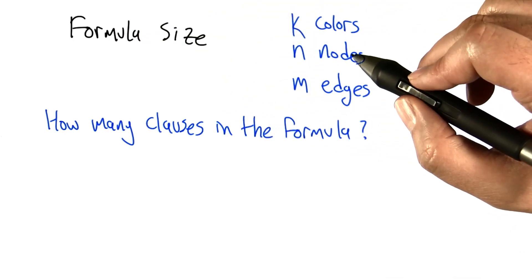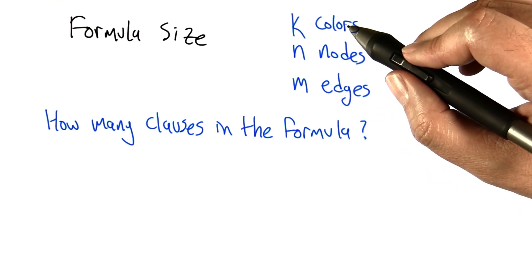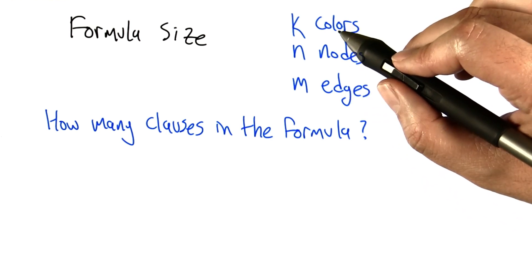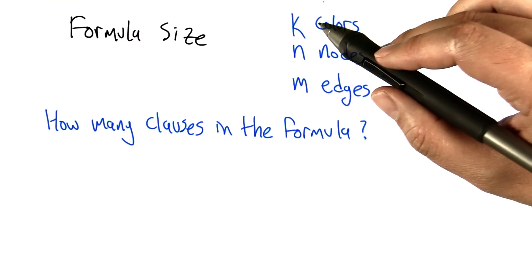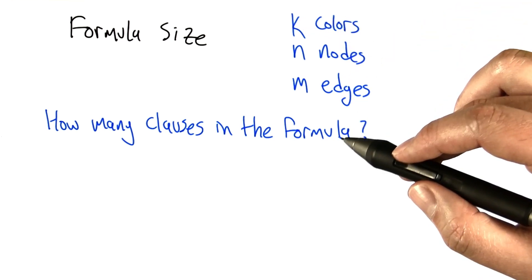What I want you to think about is imagine we've got a graph with n nodes and m edges, and we're going to find out whether it's colorable with k colors by turning it into a big formula like the one I just showed you. I want to know how many clauses are in the formula.